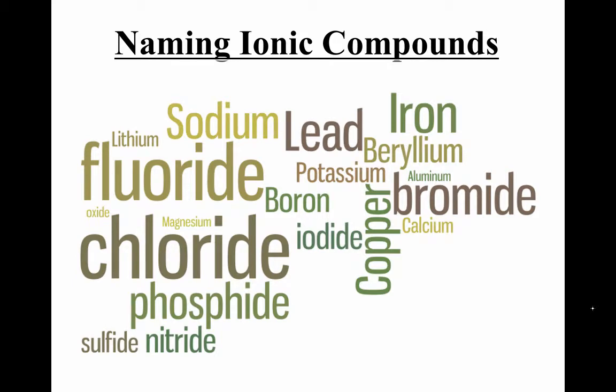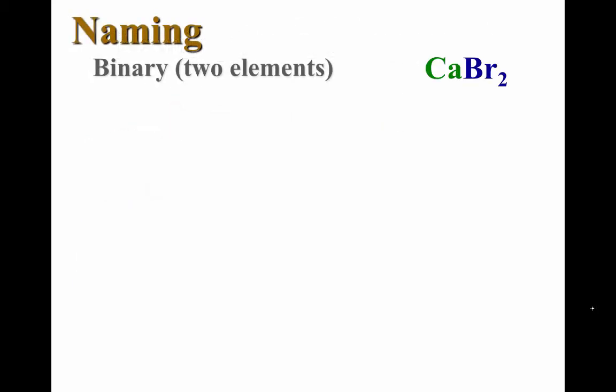Let's look at how we name ionic compounds. We'll begin with the binary compounds, the simplest. These are made of just two kinds of elements. In my example here, we have some calcium atoms and some bromine atoms that have combined. When naming this compound, you simply name the positive ion first.